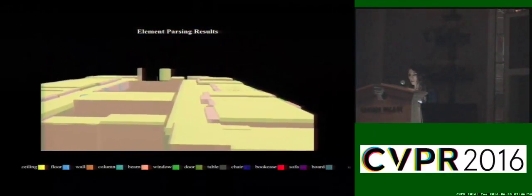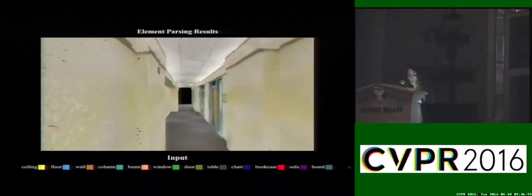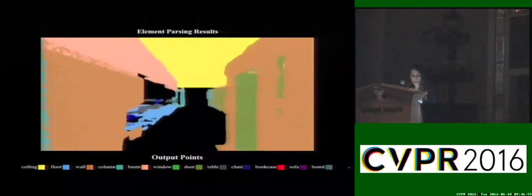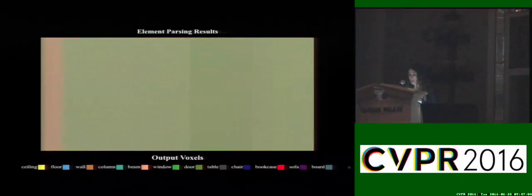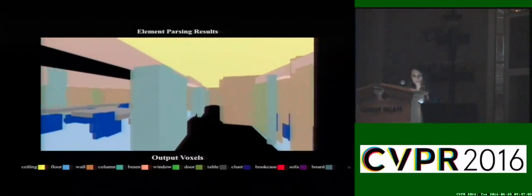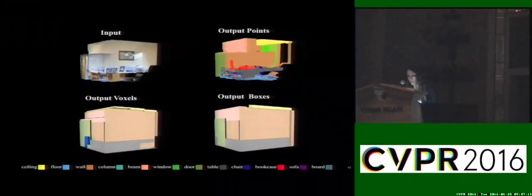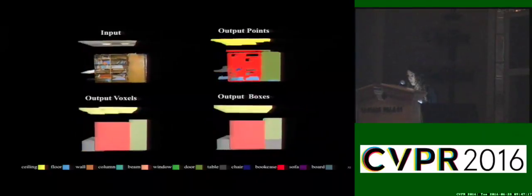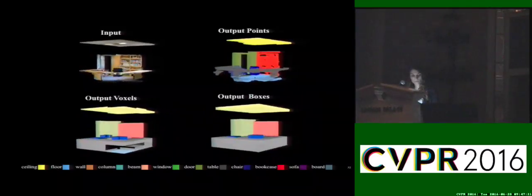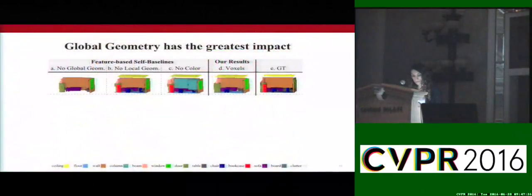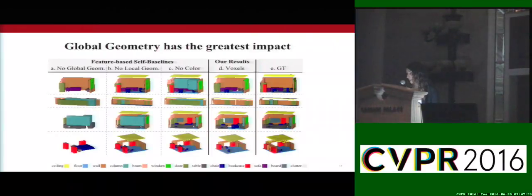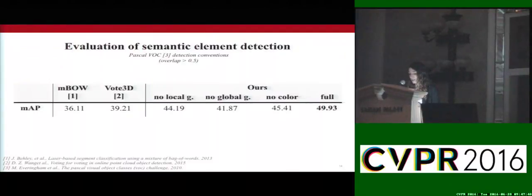This is a fly-through video of the element detection results for the complete point cloud. Here you can see the input to the algorithm — the raw point cloud — and here the output in terms of points and in terms of voxels. These are element detection results for a sample room; you can see the output in terms of voxels, bounding boxes, and points. The first three columns illustrate the ablation baselines — without global geometry, without local geometry, and without color information — and the last two correspond to our results and the ground truth. The global features have the largest impact, which is something we expected. Here is the mean average precision of detection for our algorithm, the ablation baselines, and two external 3D baselines that had the highest performance in the KITTI object detection benchmark.